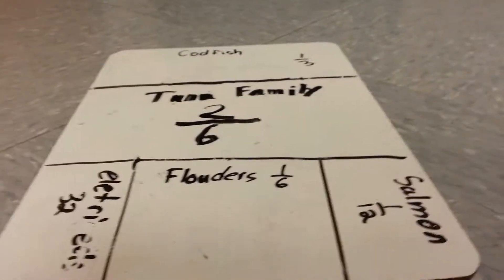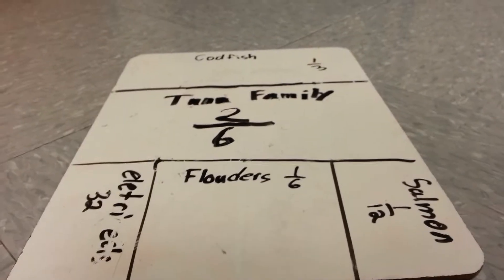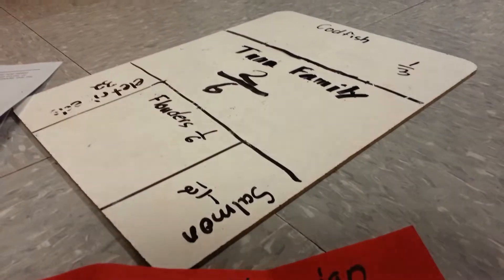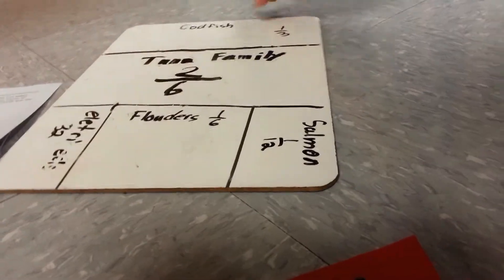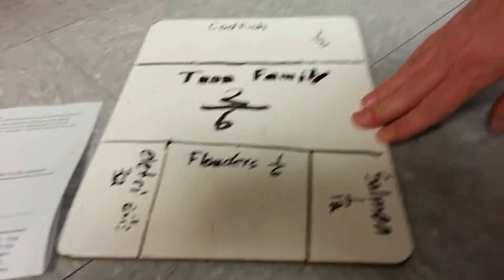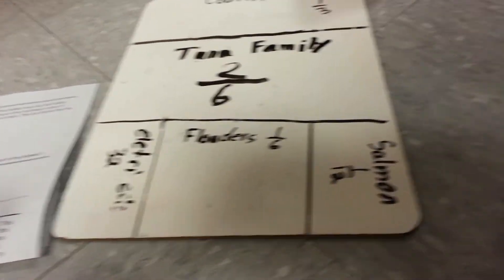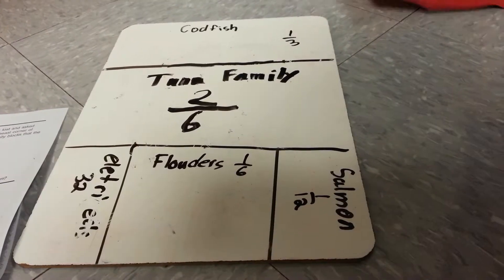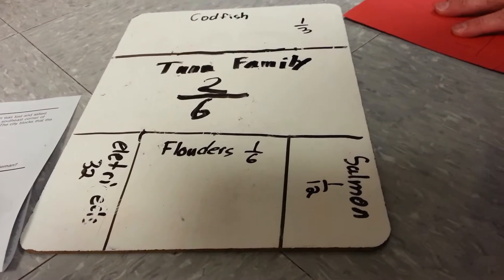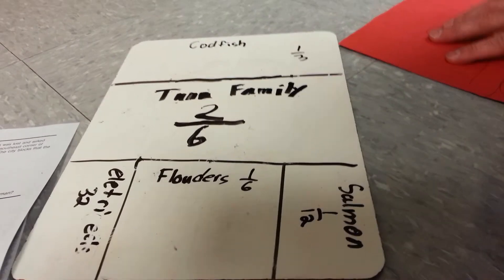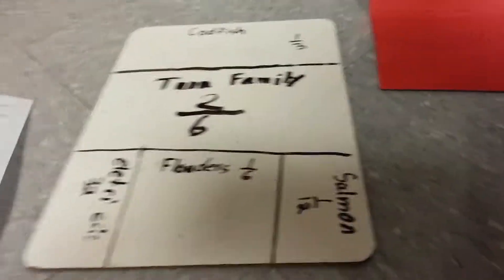So what did you do to start it? So we know that there's thirty-two electric eels and one-sixth flounders and one-twelfth of salmon, and one-twelfth of tuna fish, and codfish have one-third. So then we figured it out.